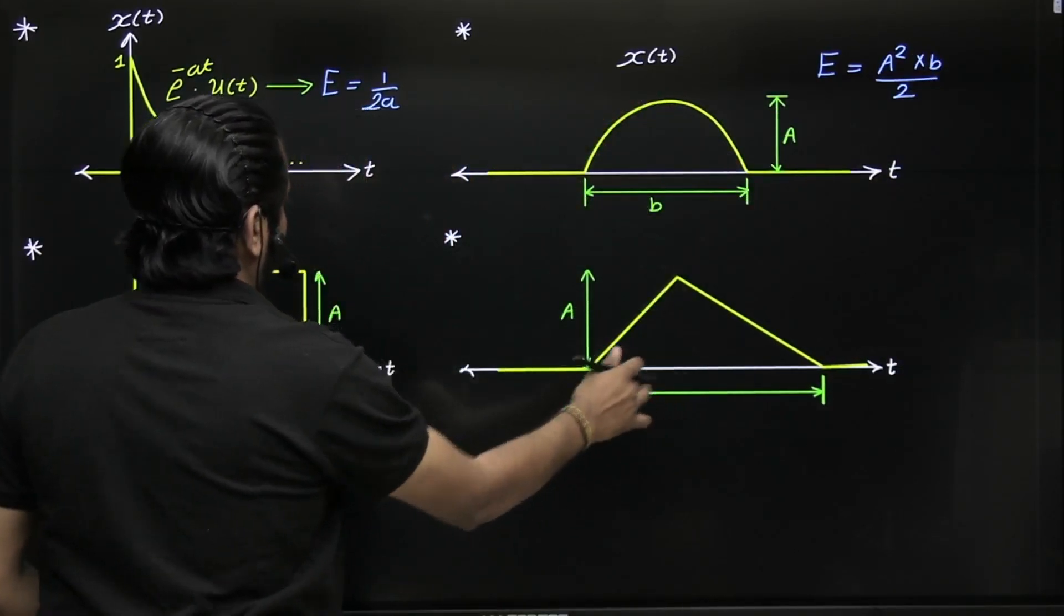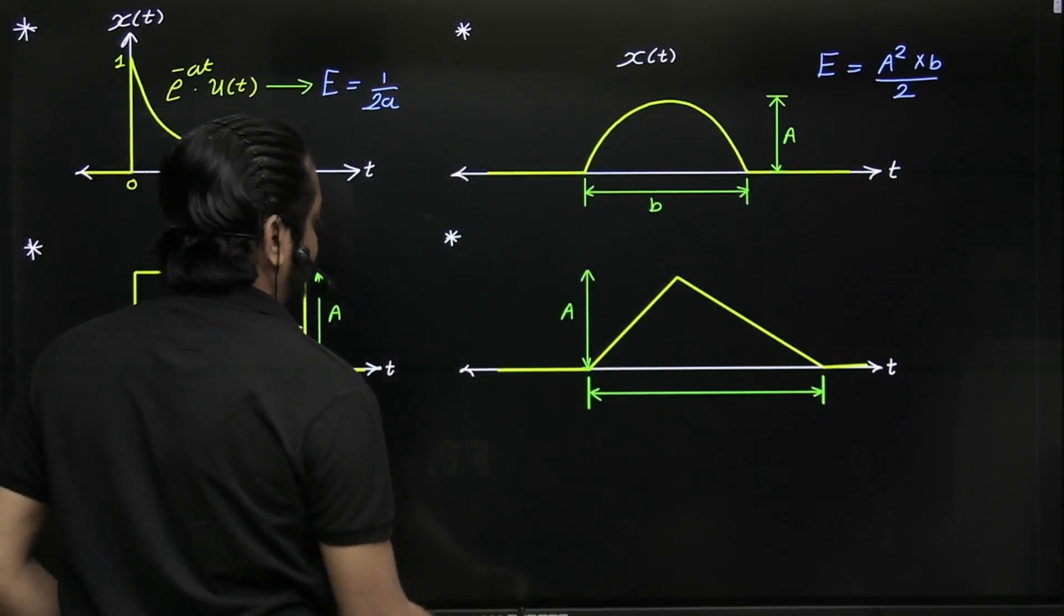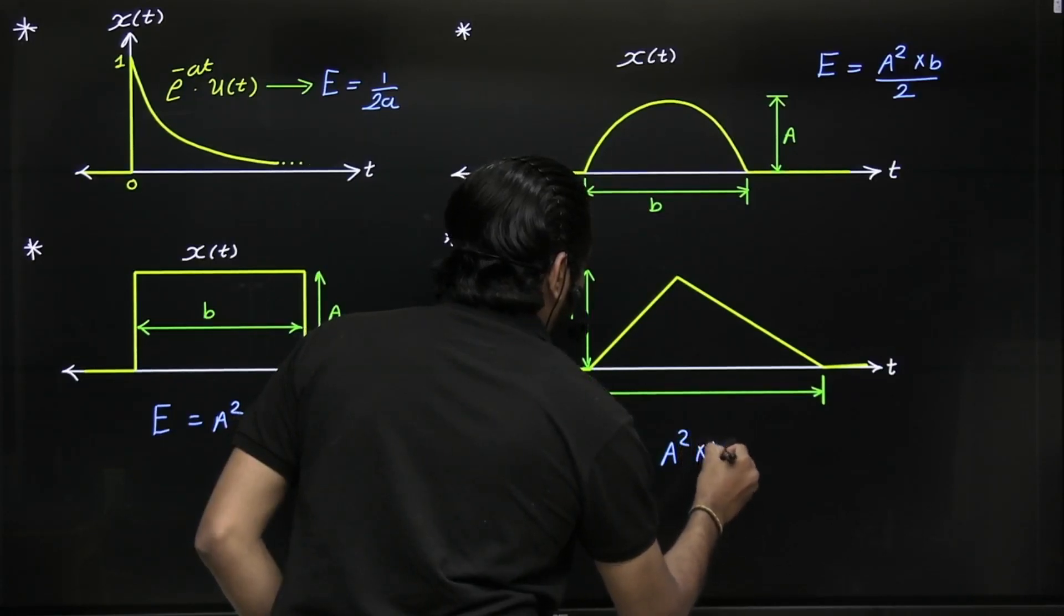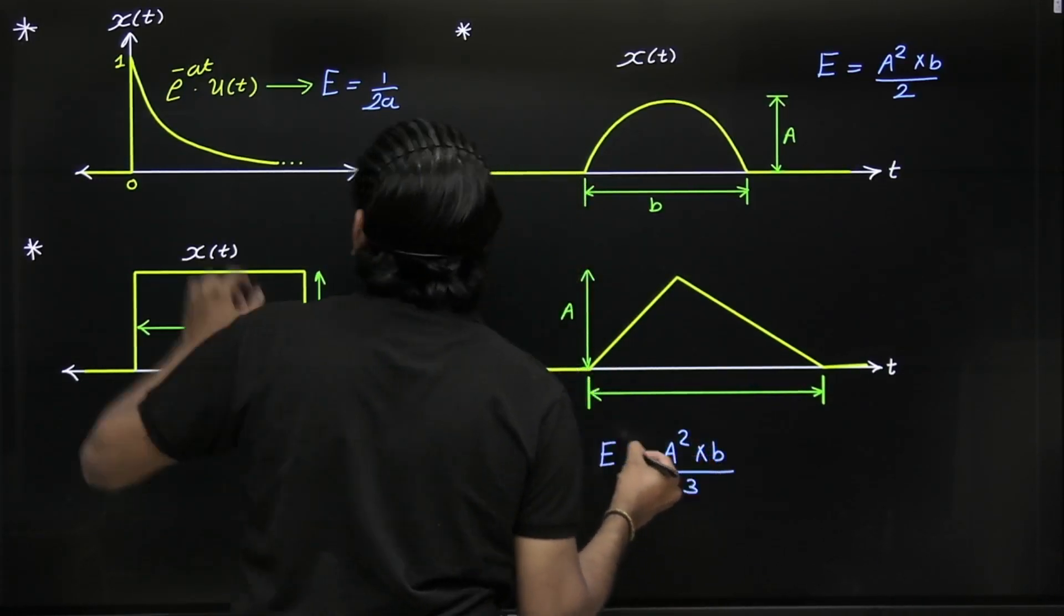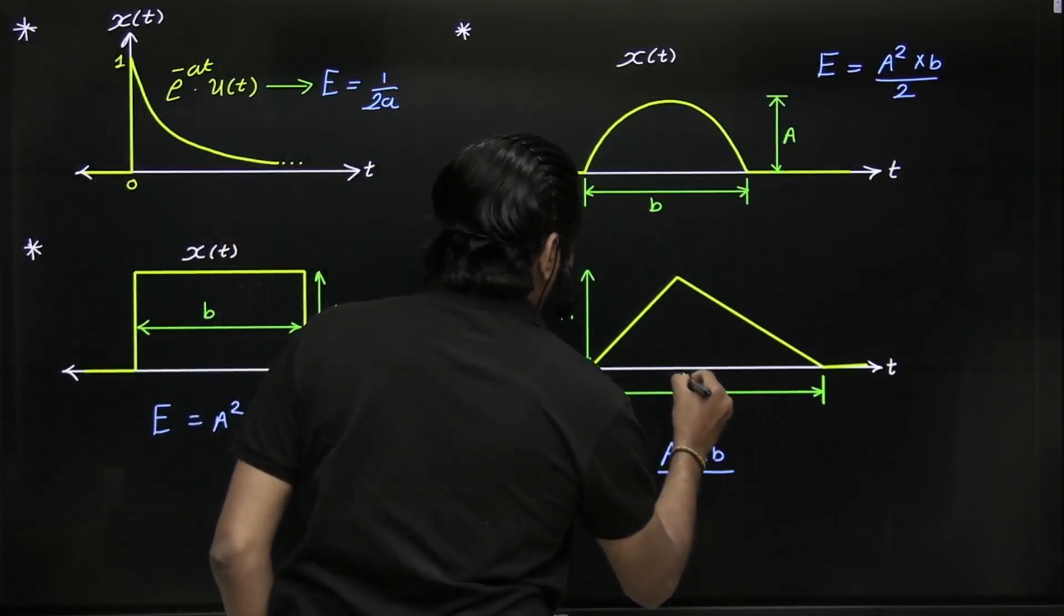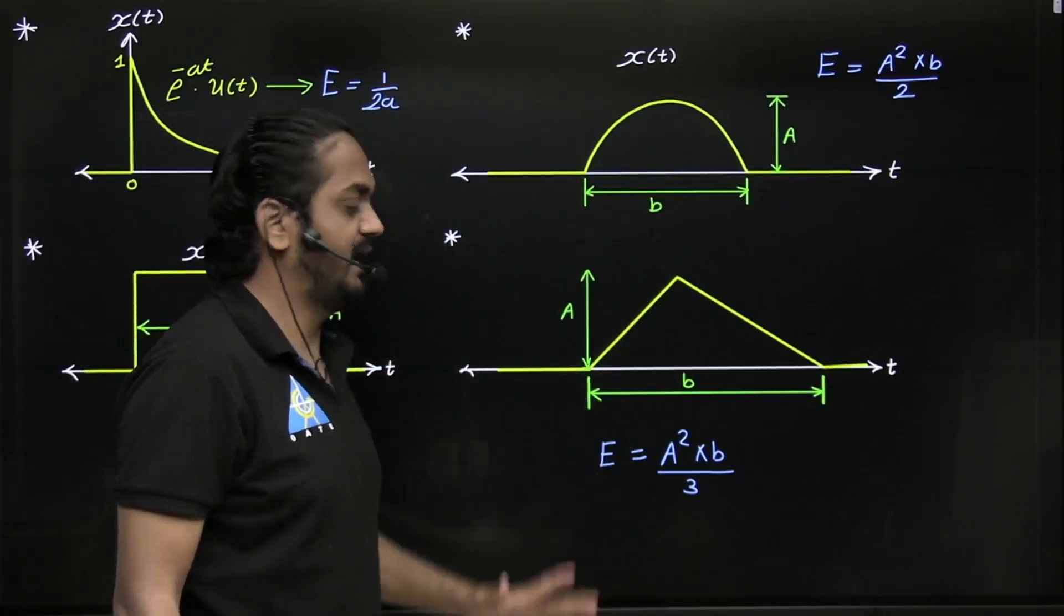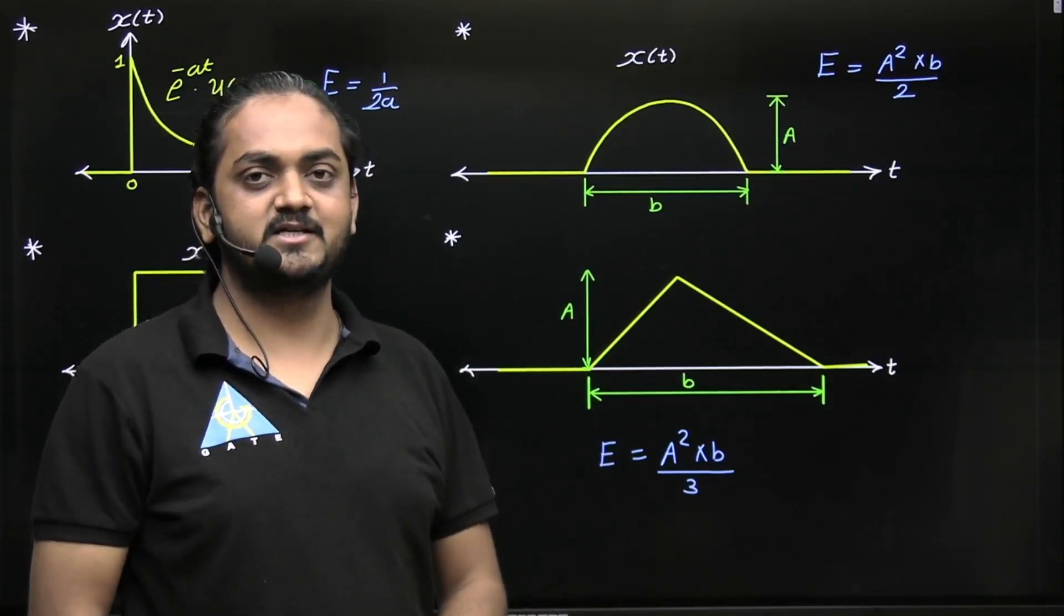Similarly, if there is a triangle like this, then its energy is given by A² times width B divided by 3, where B is the width of this triangle and A is the peak amplitude, maximum amplitude of this triangle. So remember these shortcuts.